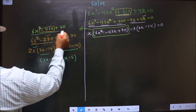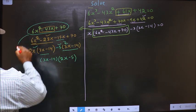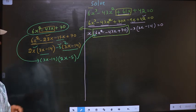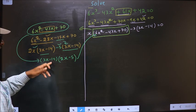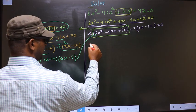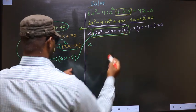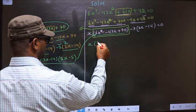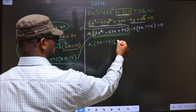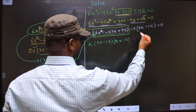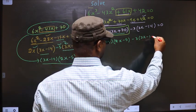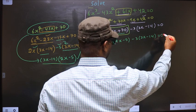From this, 3x has gone inside, so outside you will be left with minus 5. Now take out 3x minus 14 common — so here you have 2x and here you have minus 5. In place of this quadratic, I will replace this over here. That is: x times (3x minus 14)(2x minus 5). Here no change — as it is: 3x minus 14, equal to 0.